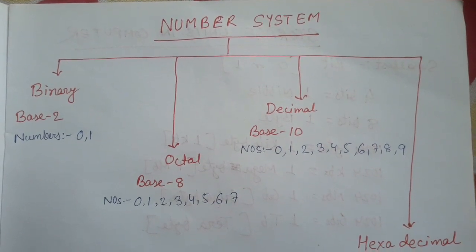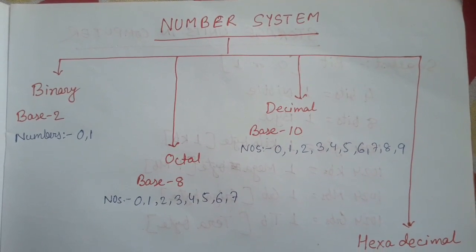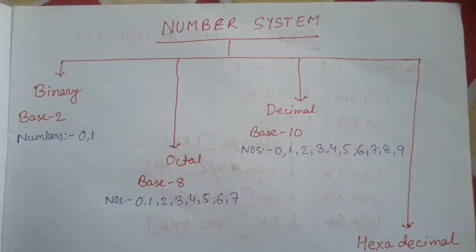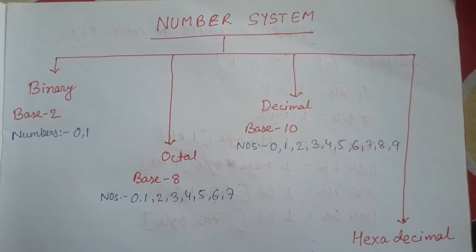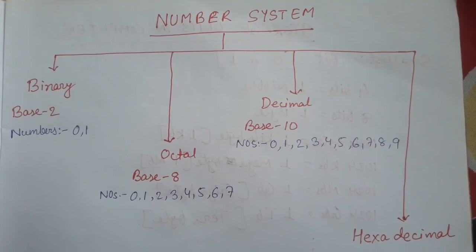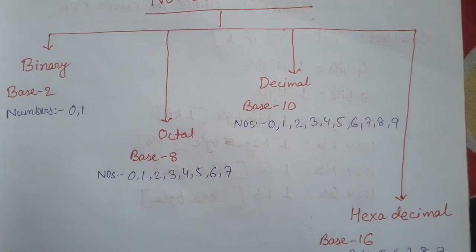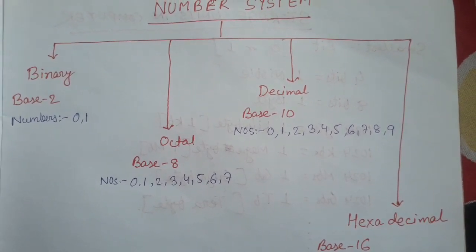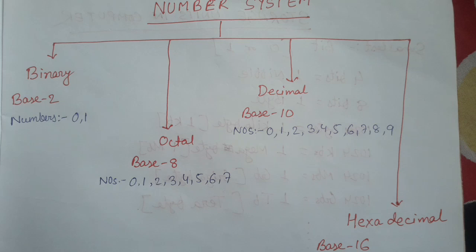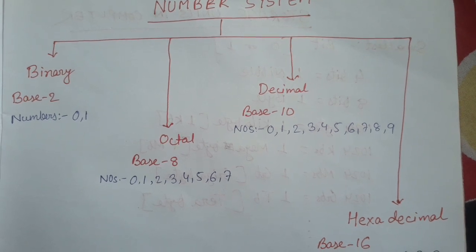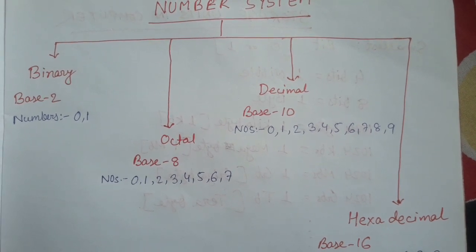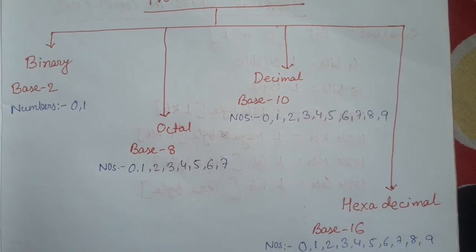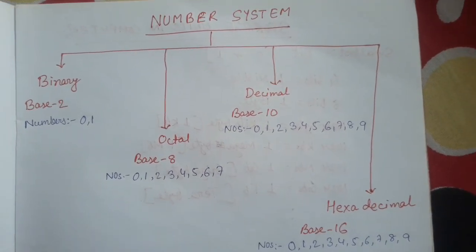Today our topic is number system. Number system has four different parts: binary, octal, decimal, and hexadecimal. Binary number system base is 2, octal number system base is 8, decimal number system base is 10, and hexadecimal number system base is 16.